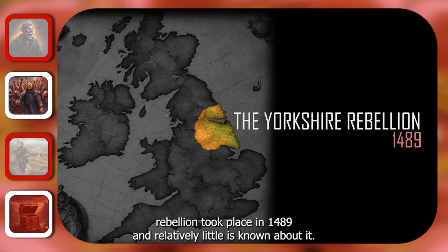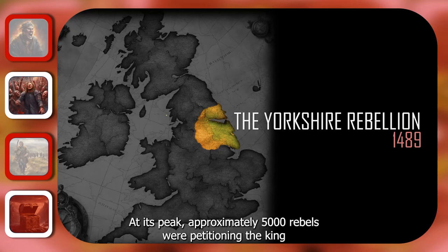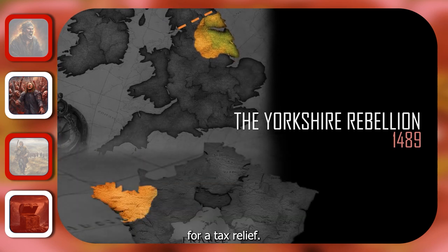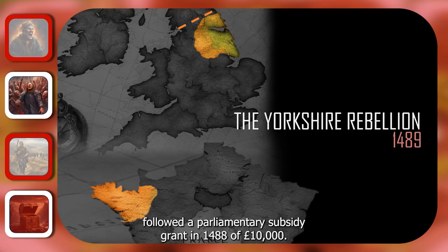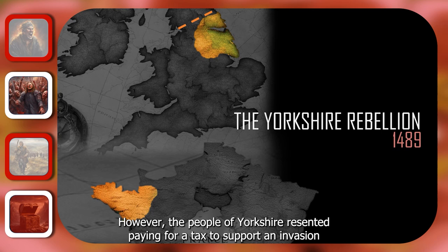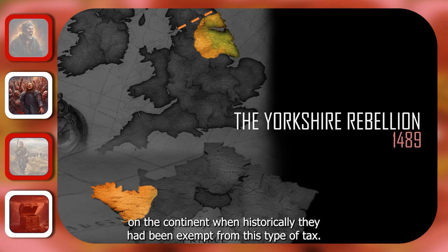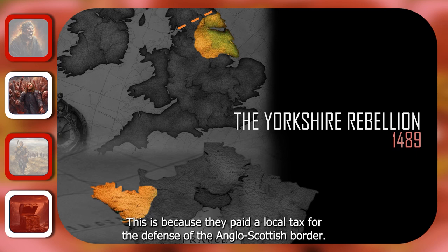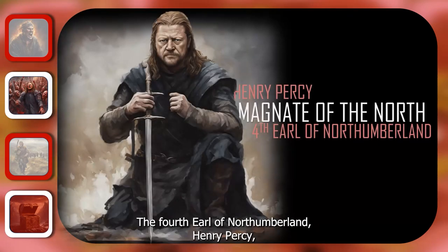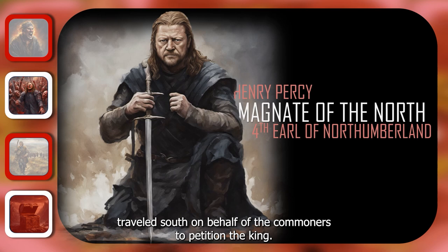The Yorkshire Rebellion took place in 1489 and relatively little is known about it. At its peak, approximately 5,000 rebels were petitioning the king for tax relief. The demand for tax followed a parliamentary subsidy grant in 1488 of £10,000, so that Henry could launch a military campaign in Brittany. However, the people of Yorkshire resented paying a tax to support an invasion on the continent when historically they had been exempt from this type of tax, because they paid a local tax for the defence of the Anglo-Scottish border. The 4th Earl of Northumberland, Henry Percy, travelled south on behalf of the commoners to petition the king.